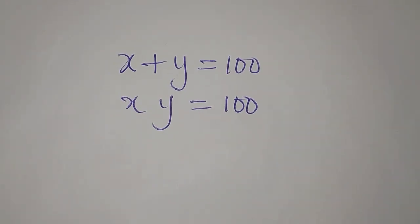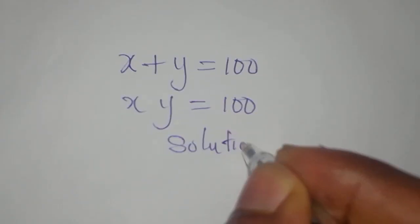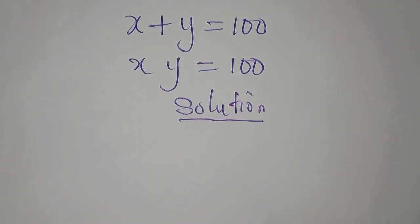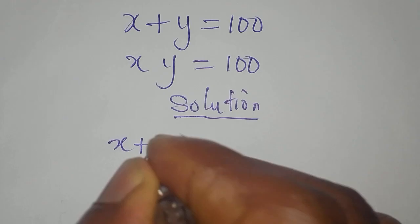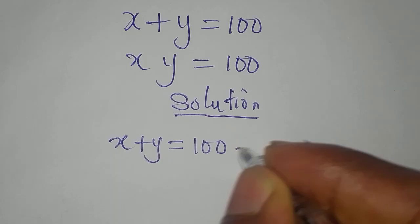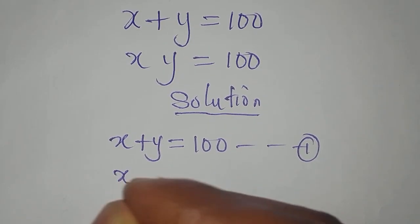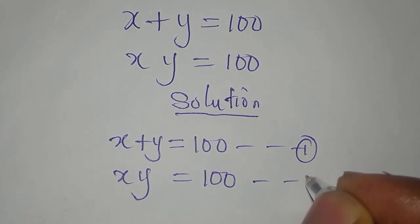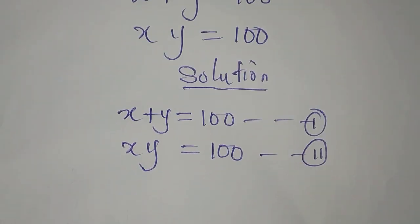Hi everyone. If you're ready, let's solve this right away. We have x plus y equals 100 as equation 1, then we have xy equals 100 again as equation 2.